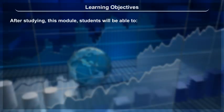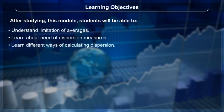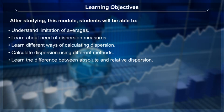Learning Objectives: After studying this module, students will be able to understand the limitation of averages, learn about the need for dispersion measures, learn different ways of calculating dispersion, calculate dispersion using different methods, learn the difference between absolute and relative dispersion, and know about the Lorenz curve.